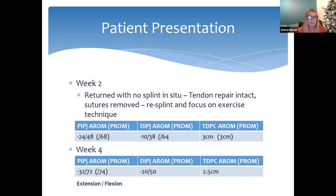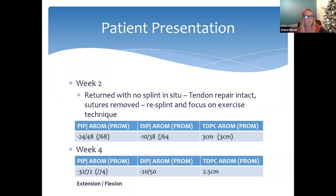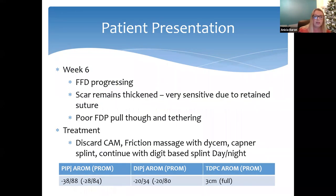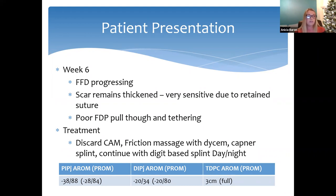At the five-week telephone review, the patient felt there were no improvements in extension despite wearing the splint constantly and performing scar management, so another face-to-face appointment was arranged. At week six, it was evident the fixed flexion deformity was progressing — the scar remained tethered and pull-through of the tendon was limited. Treatment involved self-scar massage, a Dycem sheet for friction massage, removal of a retained suture causing hypersensitivity, and advice on desensitisation. A Capener splint was provided for intermittent daytime use with clear instructions not to flex against it.